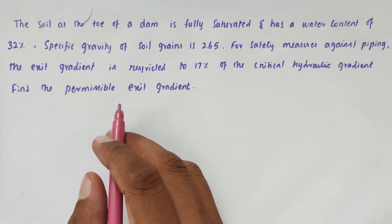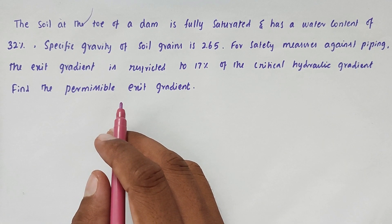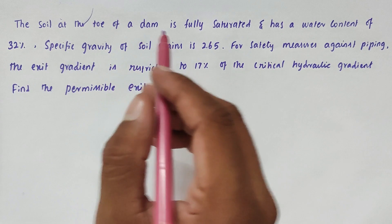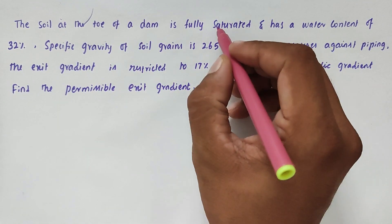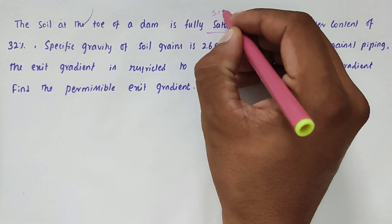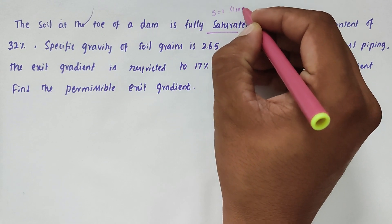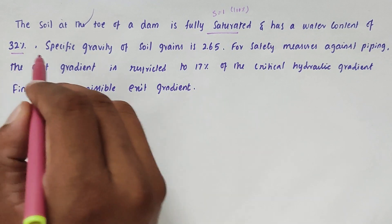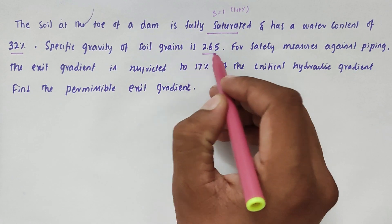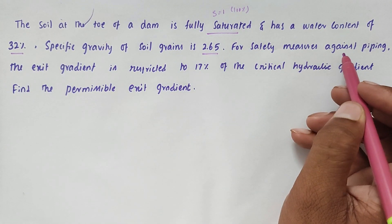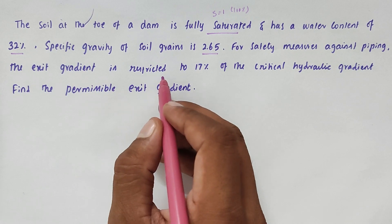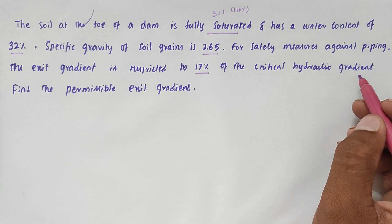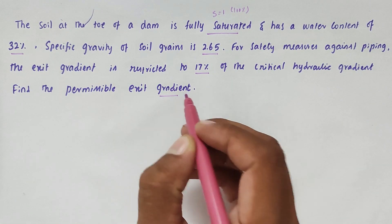Hello friends, welcome to Civil Engineering Exam. Today we're going to see a problem related to soil mechanics in the topic of stability of slopes. The problem states: the soil at the toe of the dam is fully saturated, so S equals 1, that is 100%. It has a water content of 32% and a specific gravity of soil grains of 2.65. For safety measures against piping, the exit gradient is restricted to 17% of the critical hydraulic gradient. Find the permissible exit gradient.